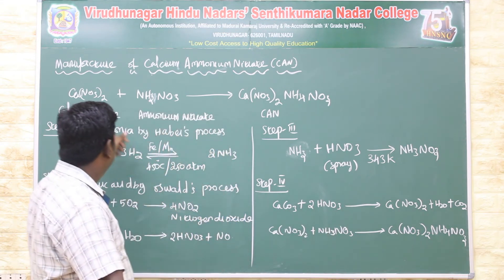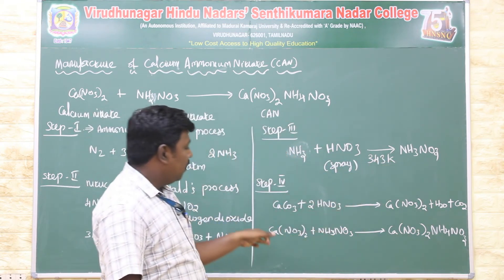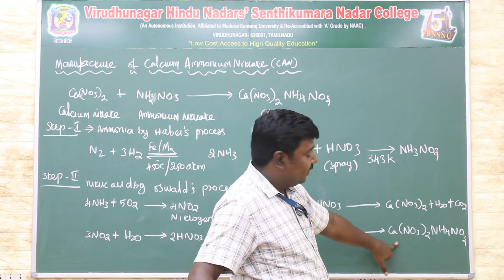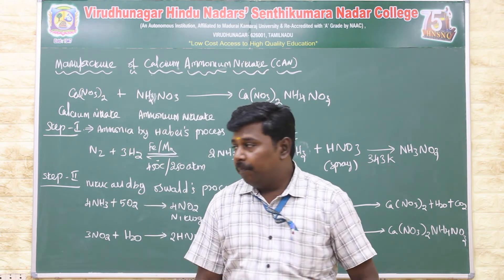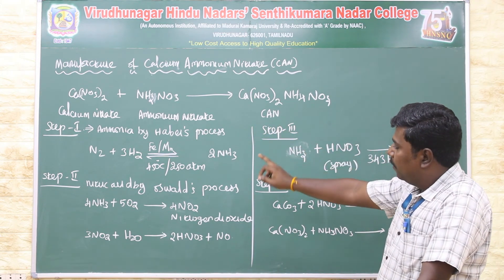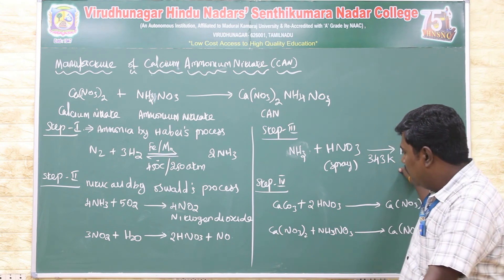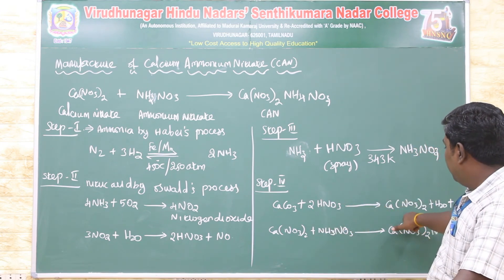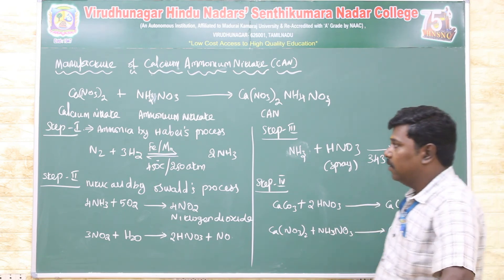Ammonia reacts with nitric acid. In the inner process, ammonium nitrate can be used. Step one is ammonia, step two is nitric acid. Combining steps one and two gives ammonium nitrate. Calcium nitrate plus ammonium nitrate gives calcium ammonium nitrate.